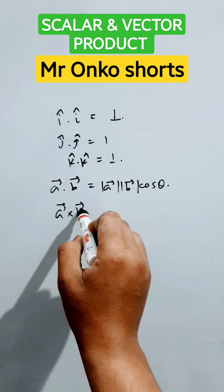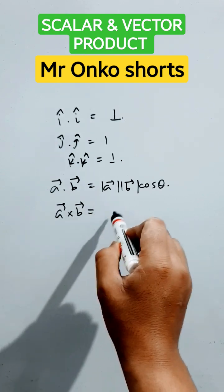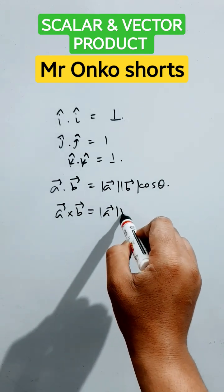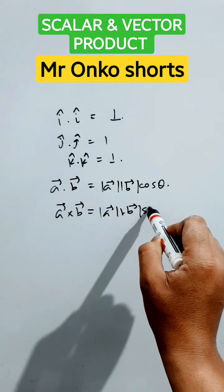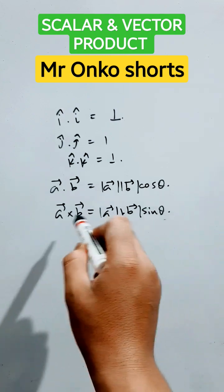Whenever it is cross product, then it will be a vector result. So it will be A into B into sin theta. Theta is the angle between the two vectors.